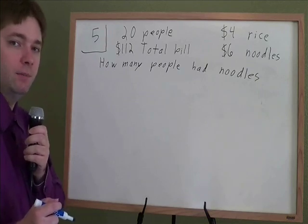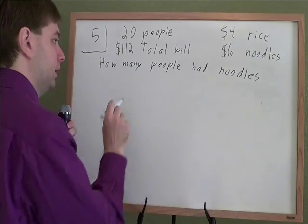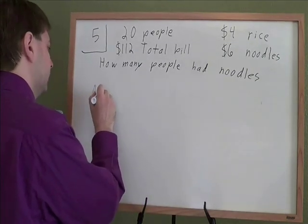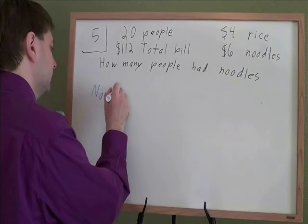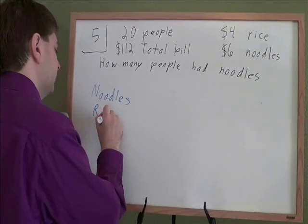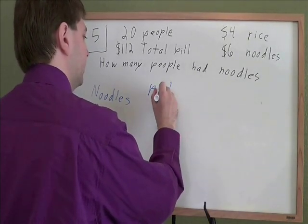The hard part of this problem is setting it up. So if we're having trouble setting it up and we've got a lot of things going on, let's just make a big table. We're going to have a row for noodles and a row for rice. First thing we need to talk about is how many people had each. Well, we don't know.